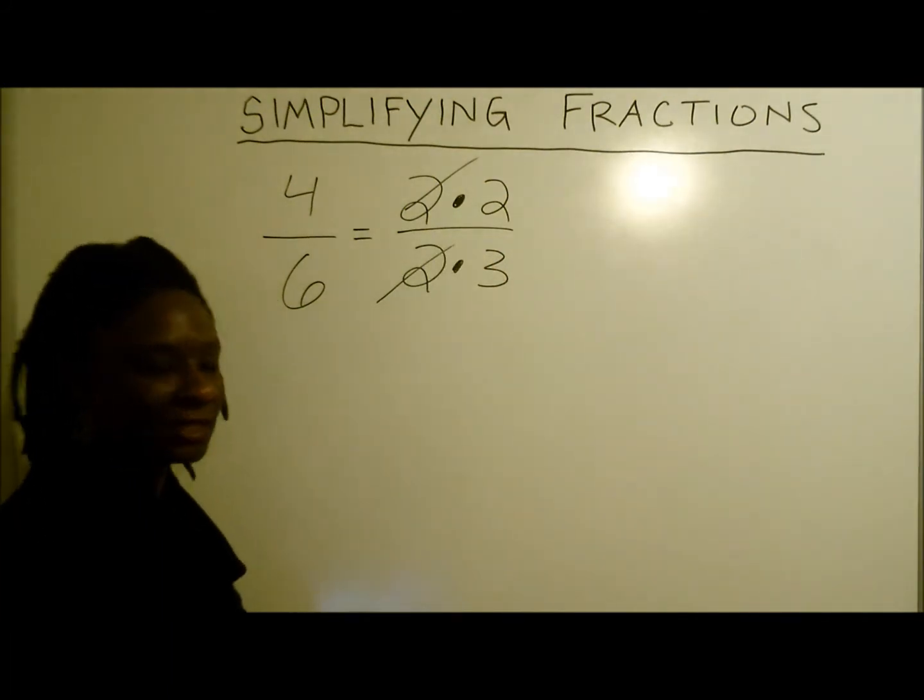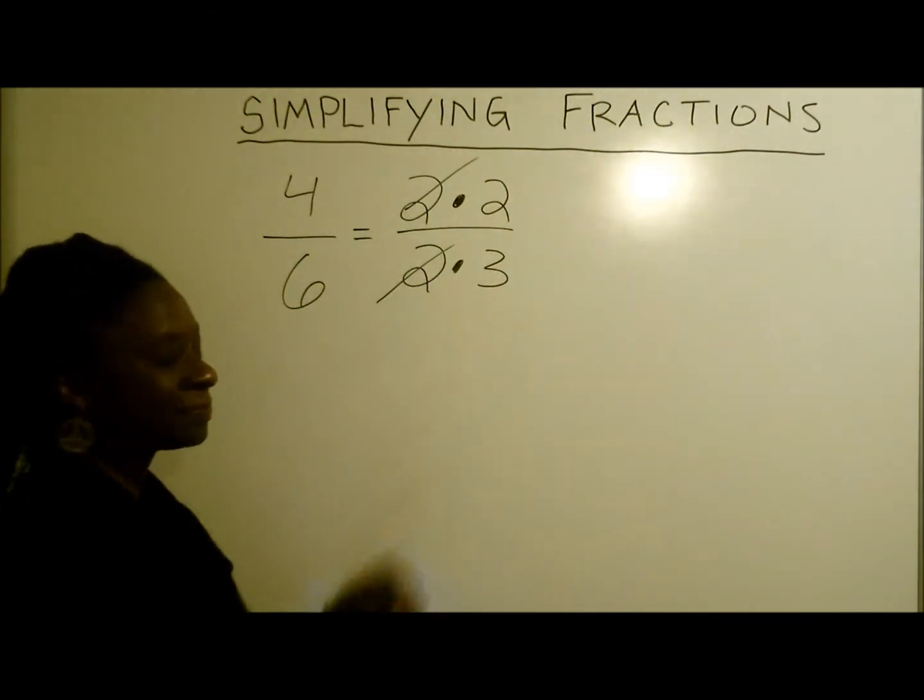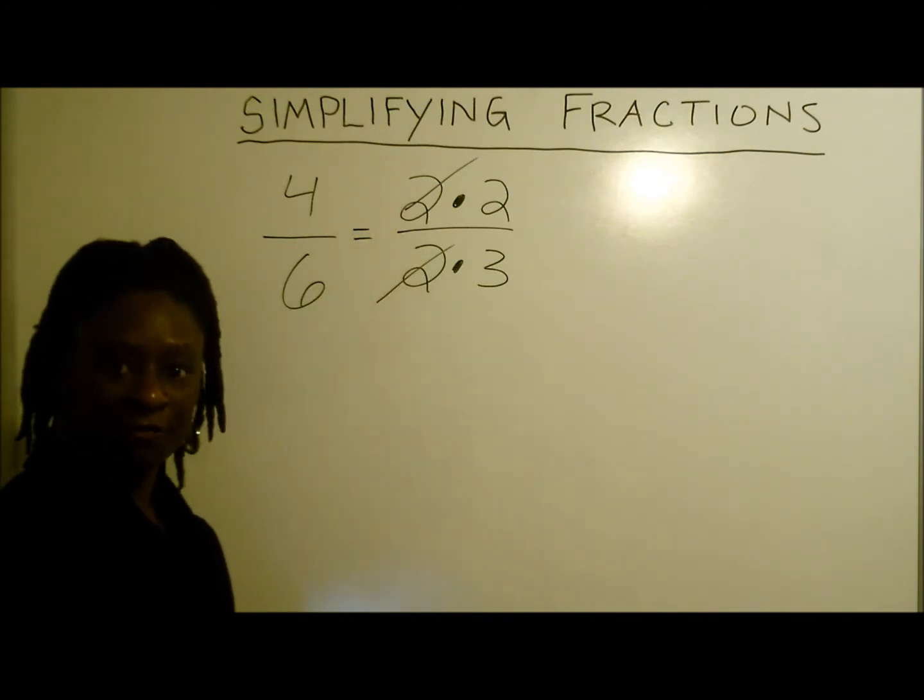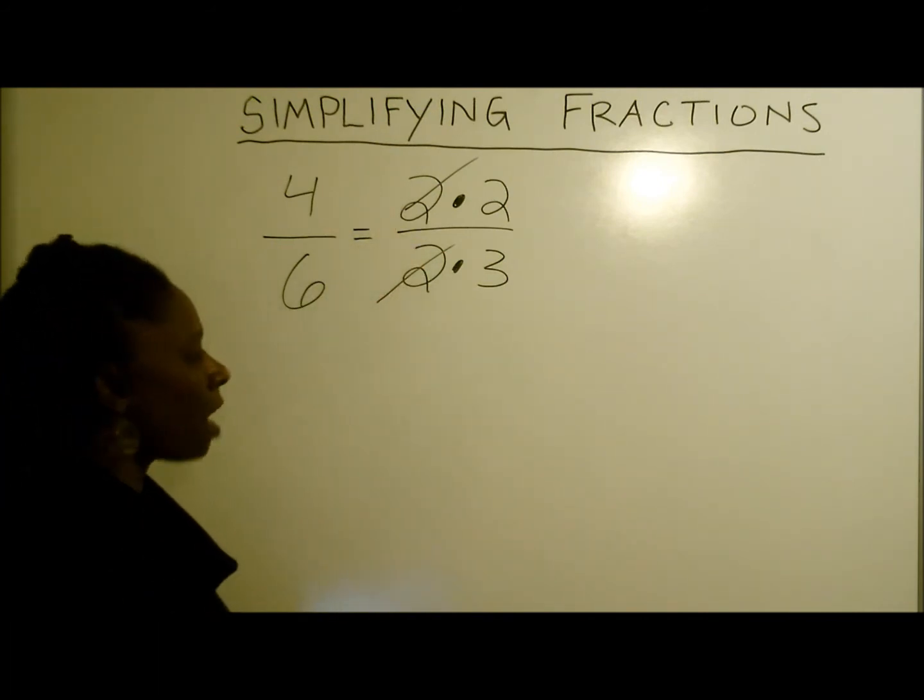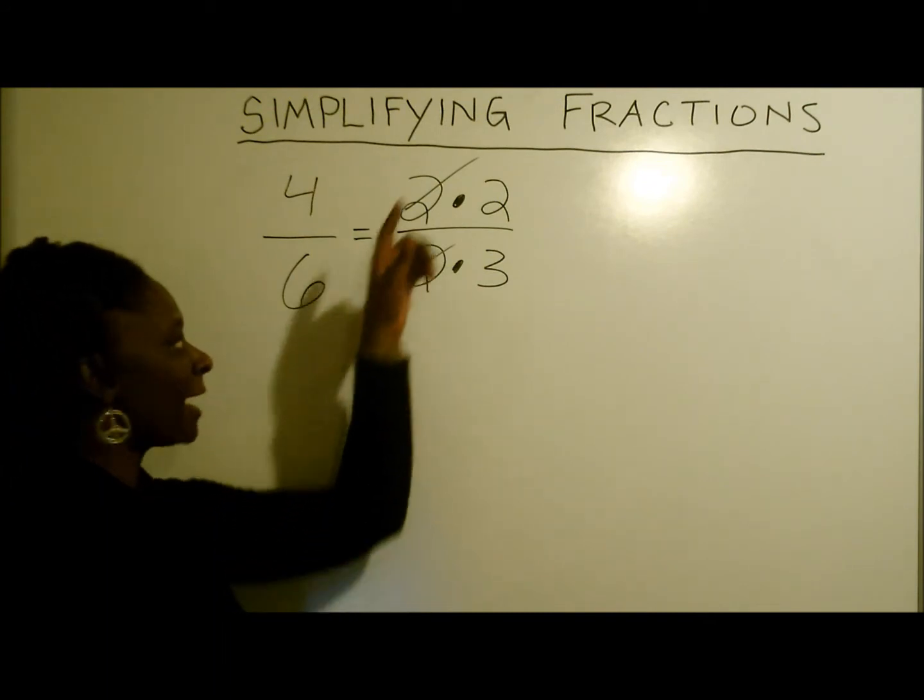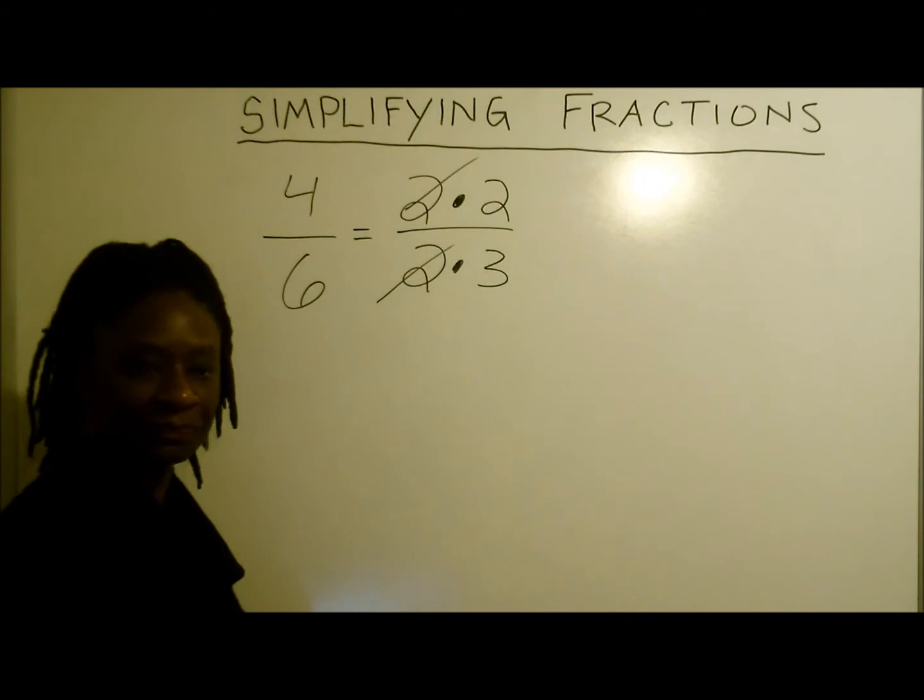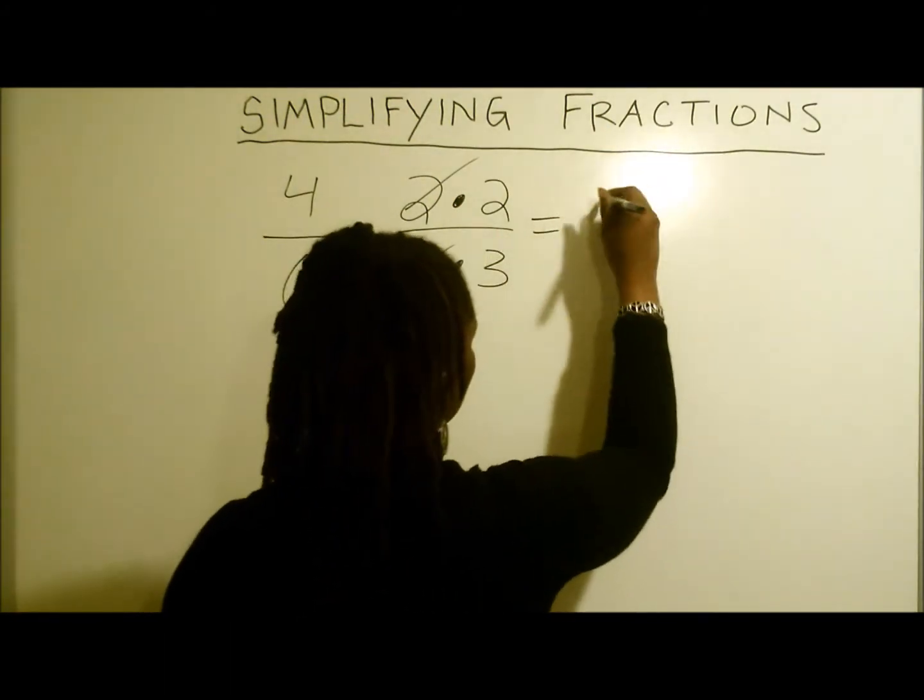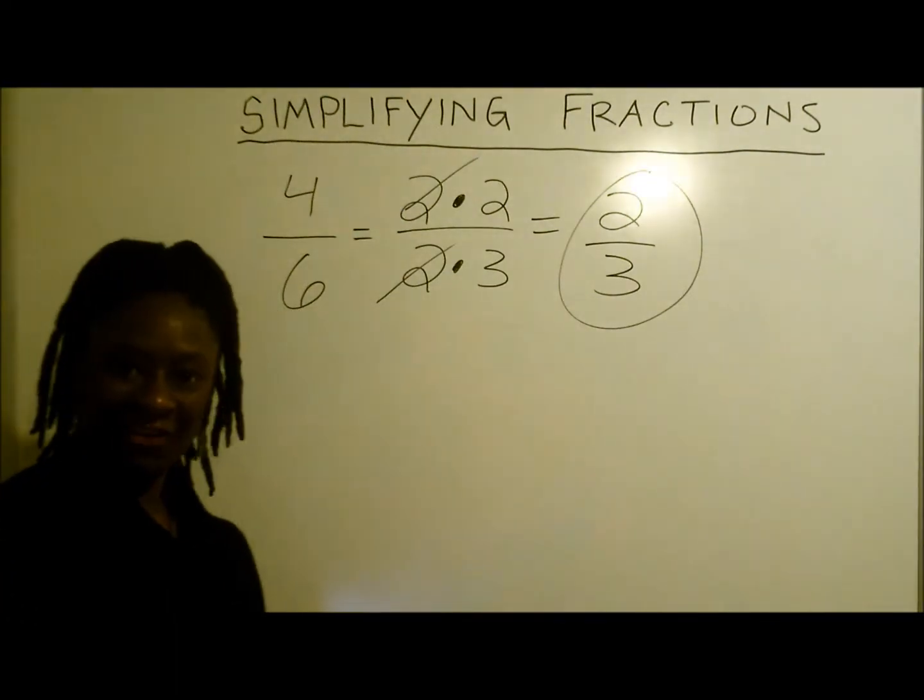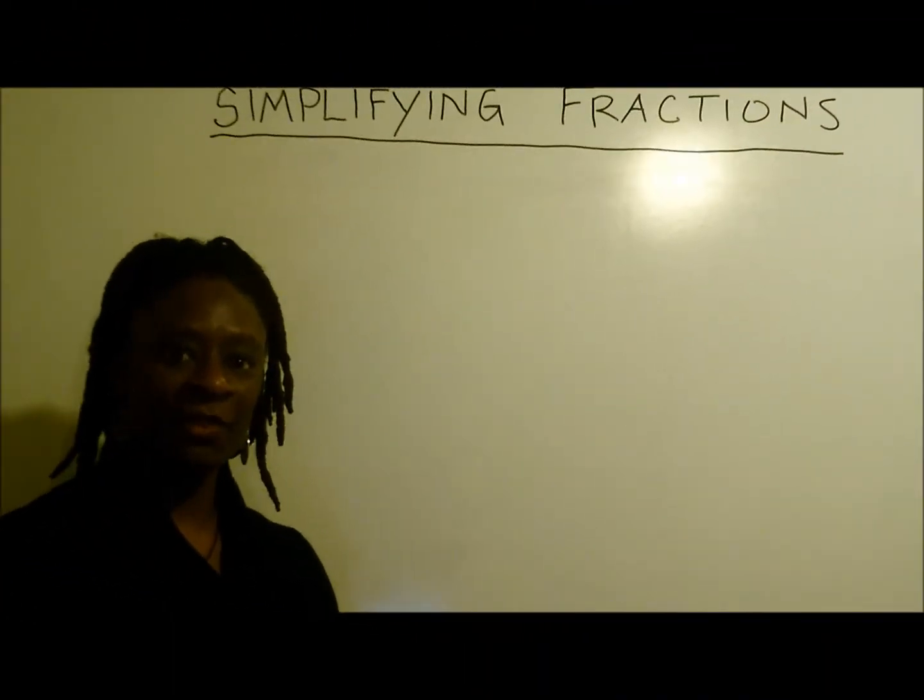Now what we're left with is 2 over 3. If you notice, 2 over 2 is also equivalent to 1. So in all actuality, we're simply multiplying 1 by 2 over 3. So what we're left with is 2 thirds. Great. That's our answer. Let's do another one.